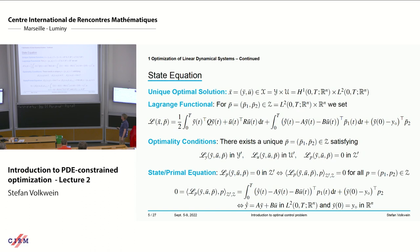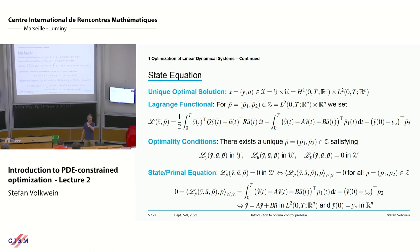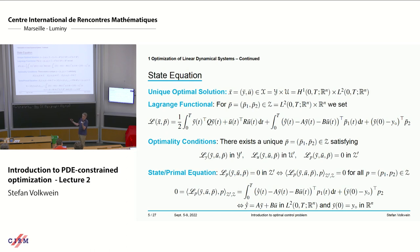Because these are arbitrary directions, you can choose P2 equal to zero or P1 equal to zero independently. This means the first component should be zero and the second should be zero. The first being zero means this equation holds for almost all T — which is nothing else but the differential equation — and the second gives the initial condition. When you've done this several times, you recognize: the derivative of the Lagrangian with respect to the Lagrangian multiplier gives you the state equation.